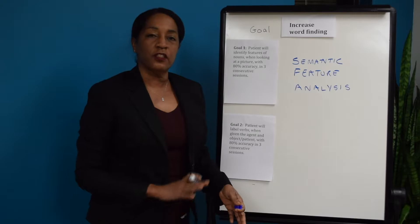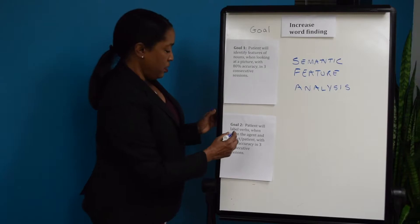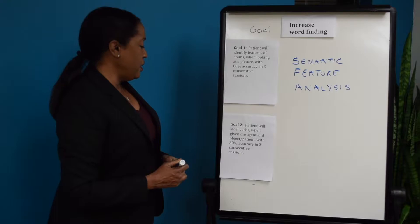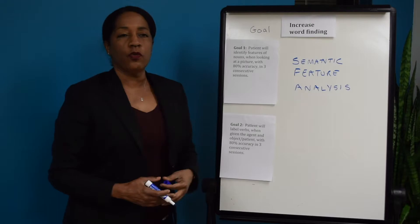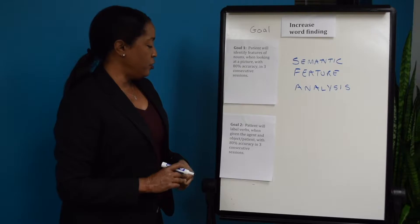This is basically using a picture and describing six features about the picture. Next I would use this goal: patient will label verbs when given the agent and object or patient with 80% accuracy in three consecutive sessions. An object or a person is known as a patient and I'll show you that in a few minutes.